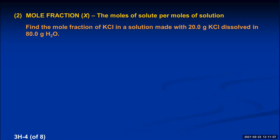We're going to find the mole fraction of KCl in the same solution — 20.0 grams of KCl dissolved in 80.0 grams of water. We need the moles of the solute KCl divided by the moles of the total solution, which is the moles of KCl plus the moles of water. This requires converting the mass of each substance into moles using molar masses from the periodic table.